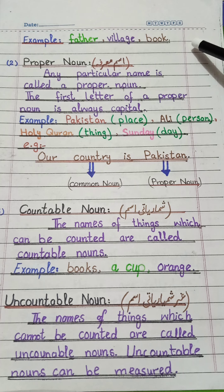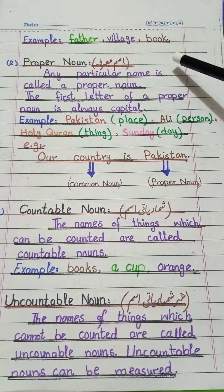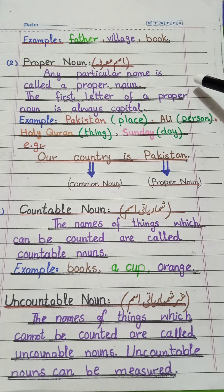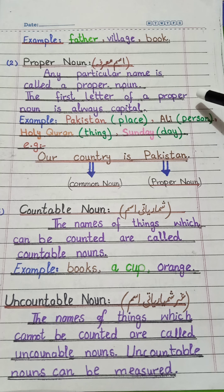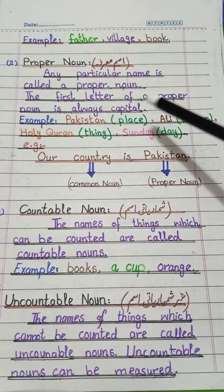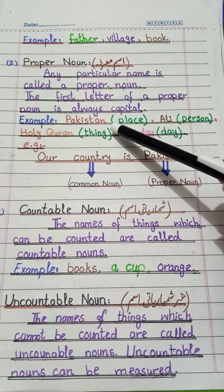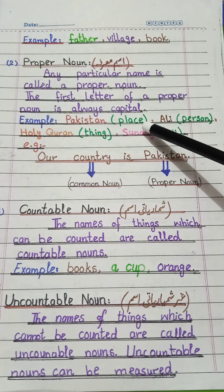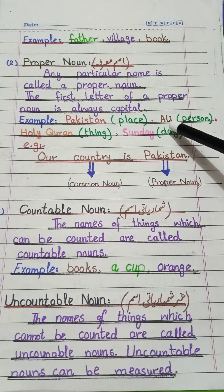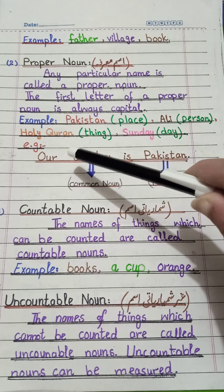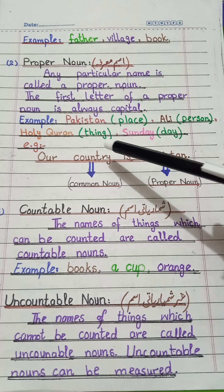Our second kind is proper noun. Any particular name is called a proper noun — a name used for only one specific person or thing. The first letter of a proper noun is always capital. Examples: Pakistan — if we say 'Pakistan' it is a proper noun, but if we just say 'place' it becomes a common noun. Ali is a specific name — proper noun, but 'person' is a common noun. Holy Quran is a proper noun, but 'thing' is a common noun. Sunday is a proper noun, but 'day' is a common noun.